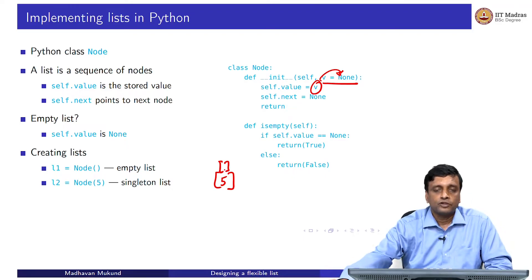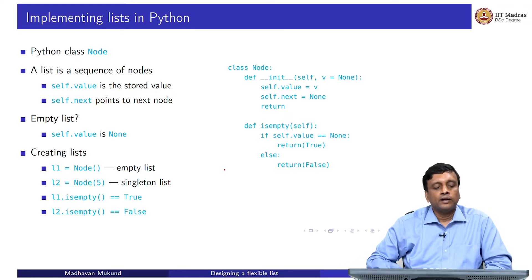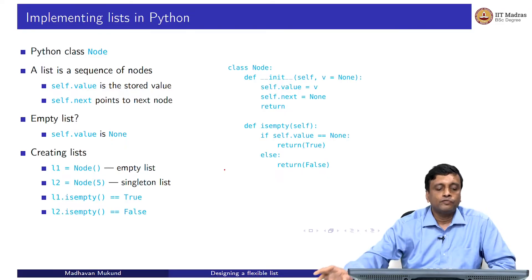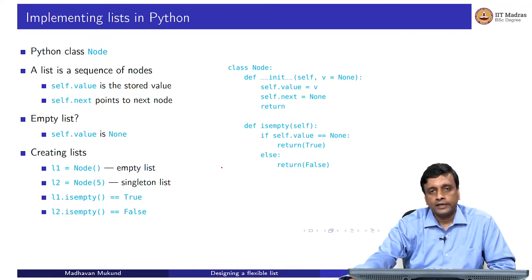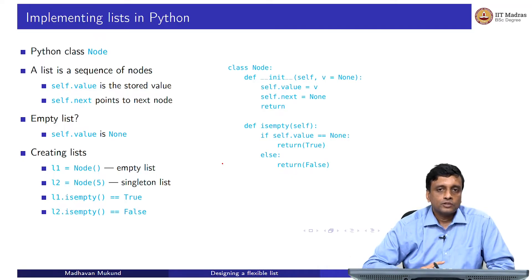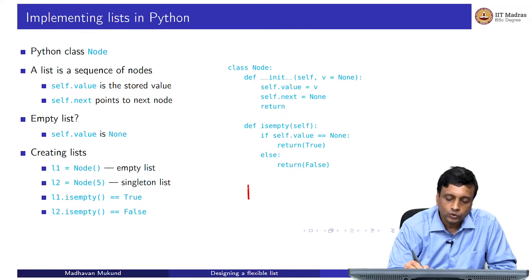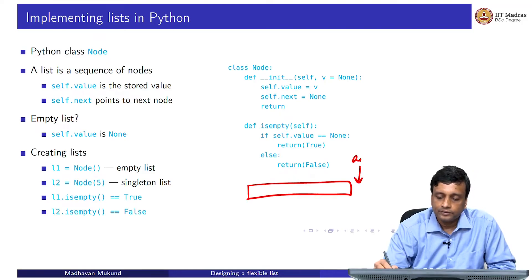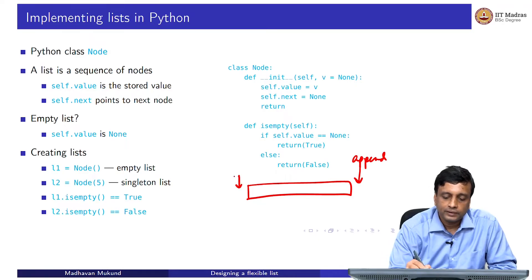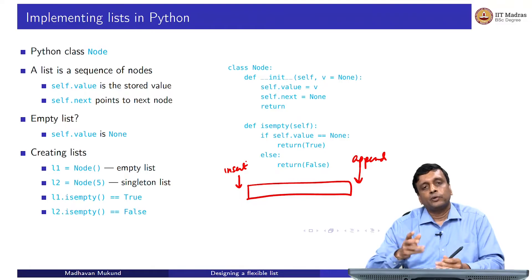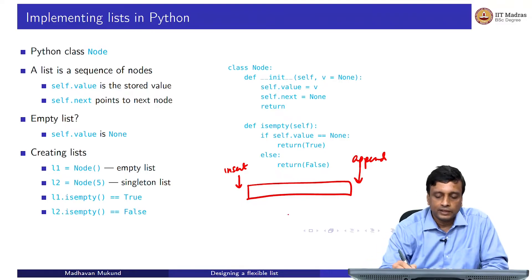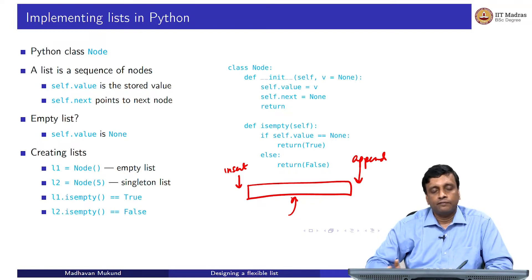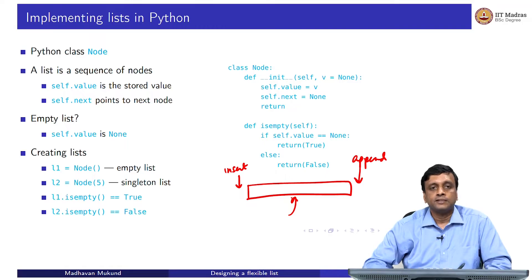This is our basic building block — this is how we build up a list. Now we have to think about how we will actually grow and shrink these lists. In a list there are many ways to define operations, but the most conventional thing is to either add at the end, which we call append, or insert at the beginning, which we call insert. You can apply the same principle to insert anywhere in the middle, but the two interesting cases are append and insert, and they have different properties — append turns out to be much easier than insert, as we will see.